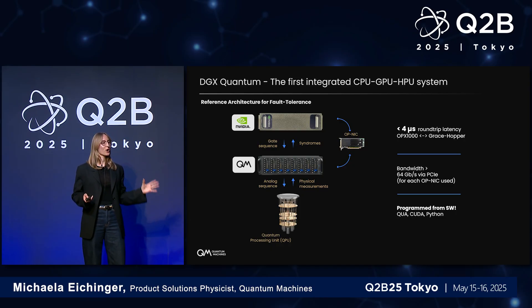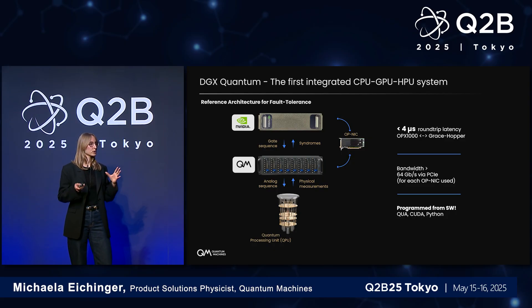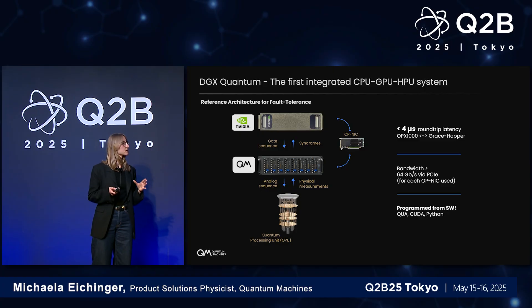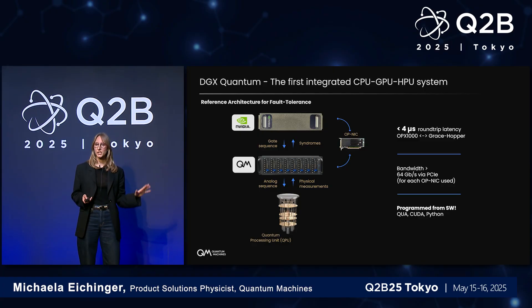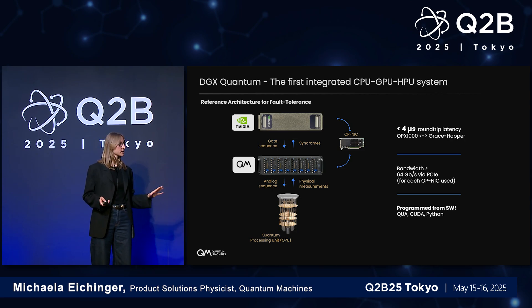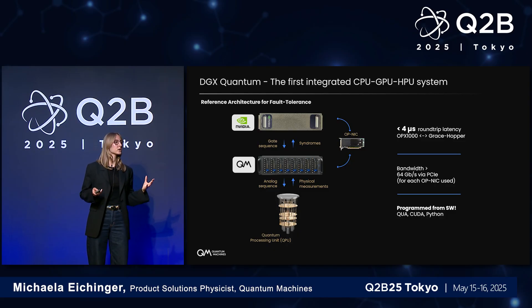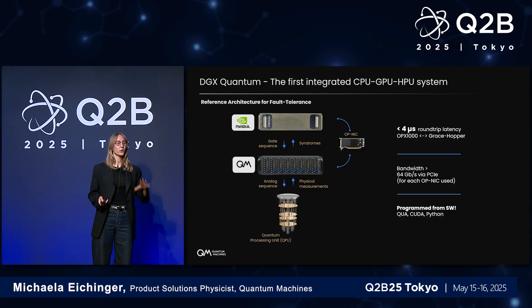We now have the first integrated CPU, GPU, and what we call the HPU — the hybrid processing unit — which is part of the OPX. This can all be programmed from a single software interface, where you use Qua — Quantum Machines' programming language — for quantum operations and real-time processing in the hardware. And now you also combine it with the large library of CUDA and CUDA Quantum on the classical resource side.